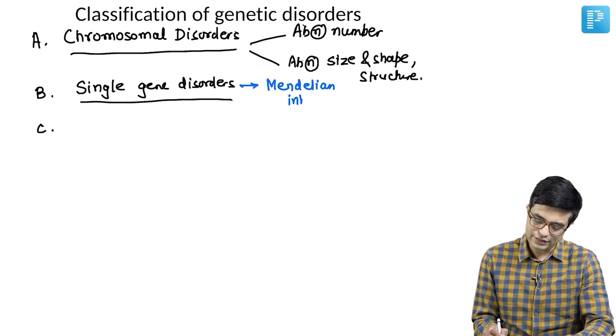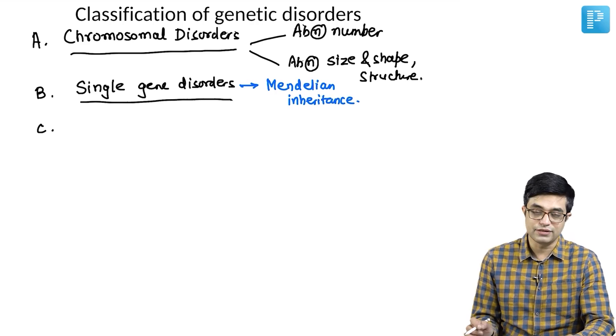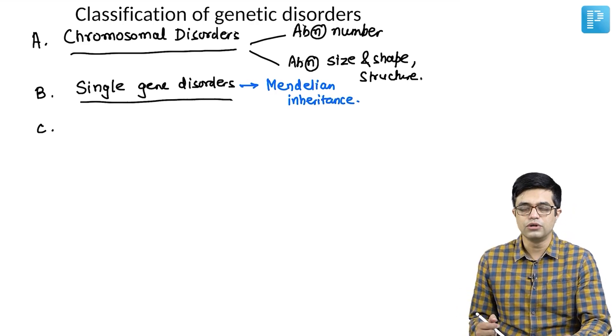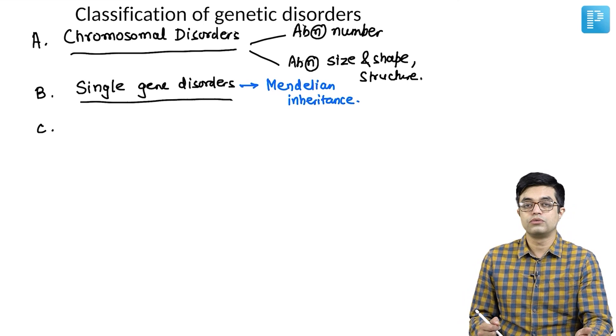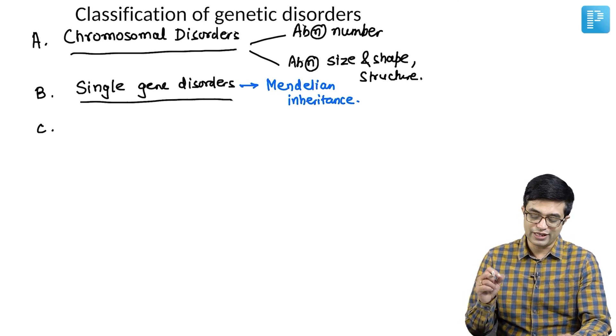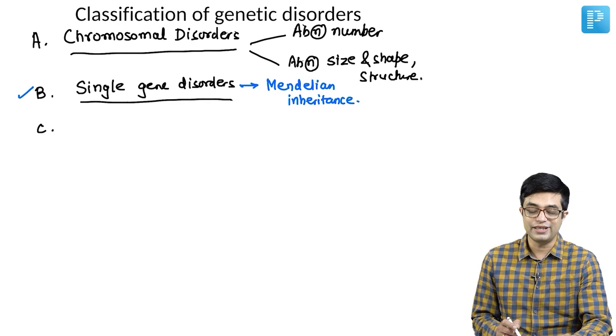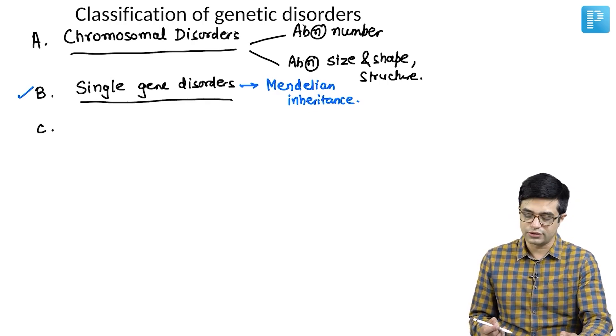All these Mendelian inheritance patterns which we will discuss, which you already know: autosomal dominant, autosomal recessive, X-linked dominant, X-linked recessive, they all show Mendelian inheritance. They are seen predominantly in single gene disorders.